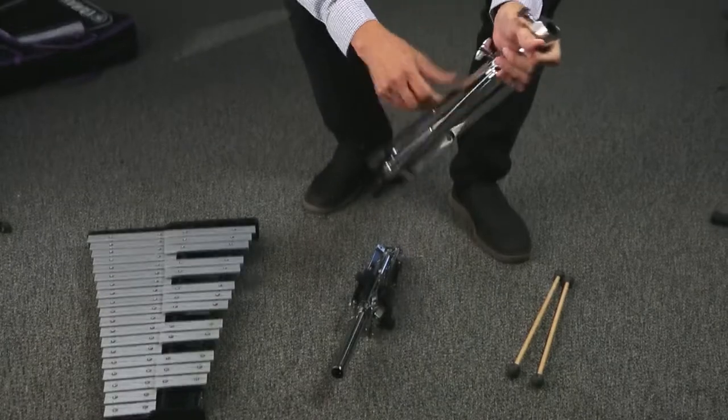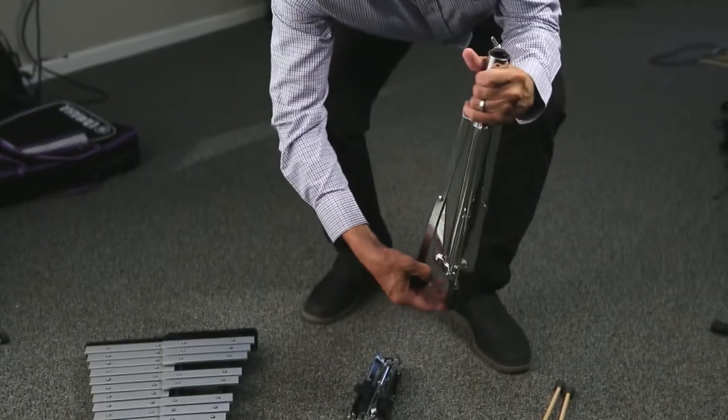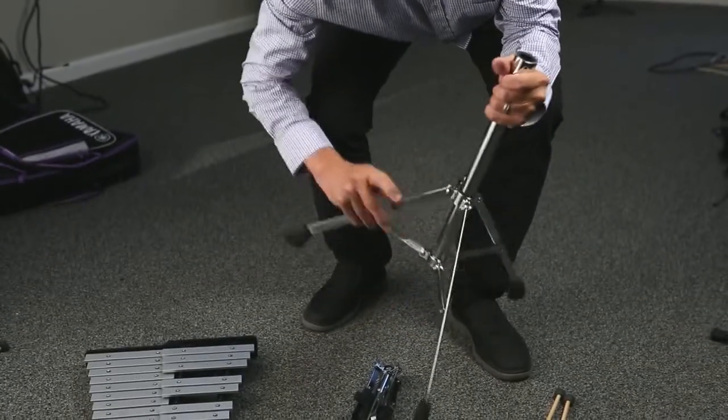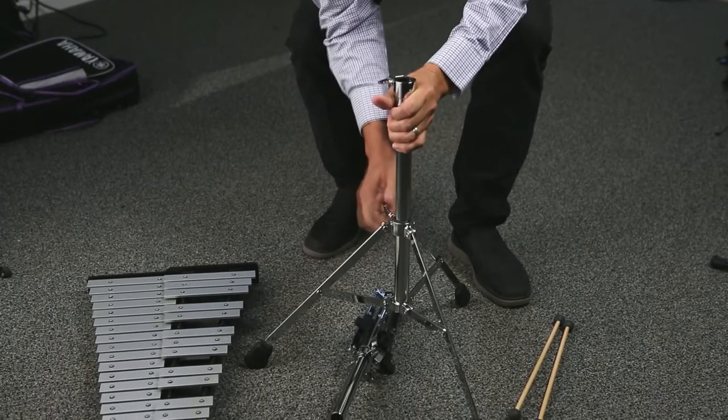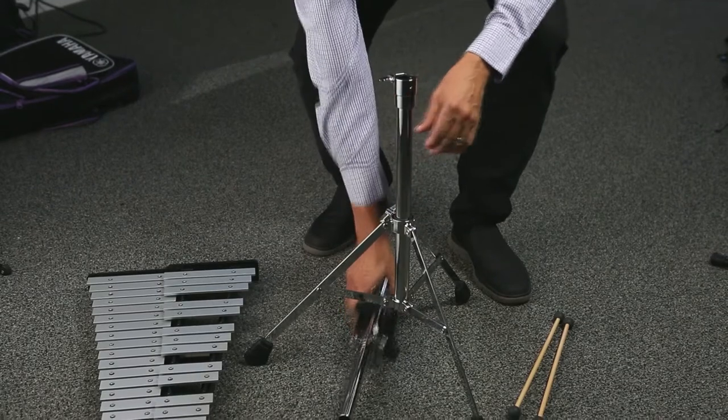Open the three feet on the bottom half of the stand by sliding the collar down about one-third of the way and tightening the screw. Be careful never to over-tighten or over-loosen any of the screws. A few turns usually does the trick.